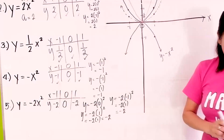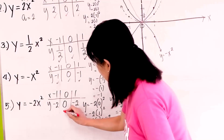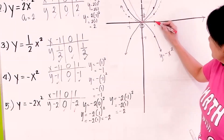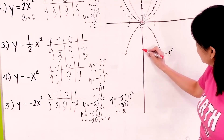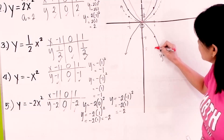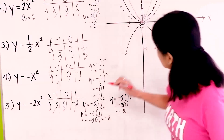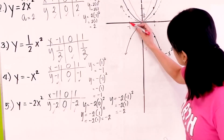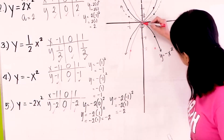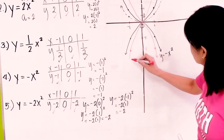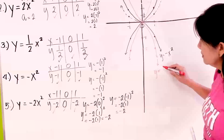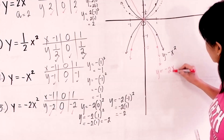And when x is negative 1, y equals negative 2 times negative 1 squared, which gives you negative 2 times 1 is negative 2. Let's plot them using a red color. (0, 0) is still here. (1, negative 2) — this is 1, negative 2 will be here. (Negative 1, negative 2) will be here. So this red graph is the graph of y equals negative 2x squared.